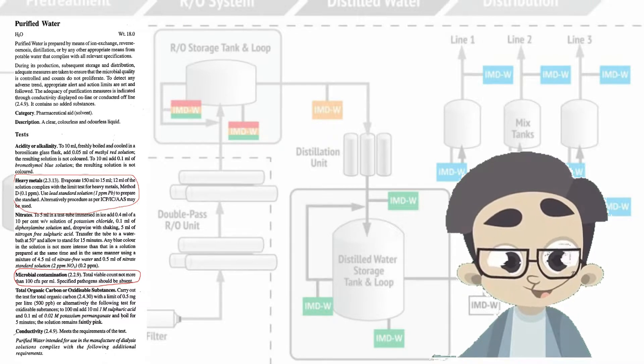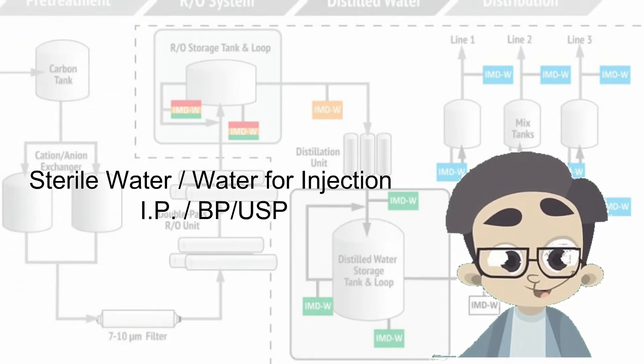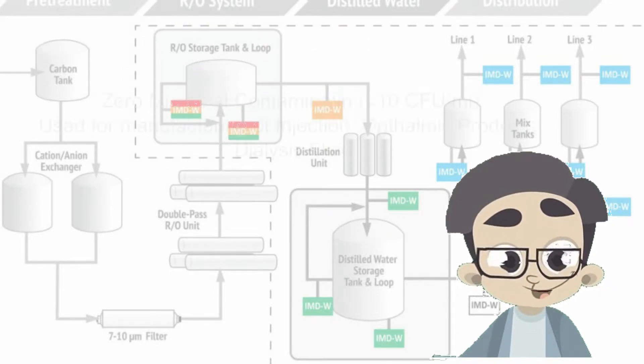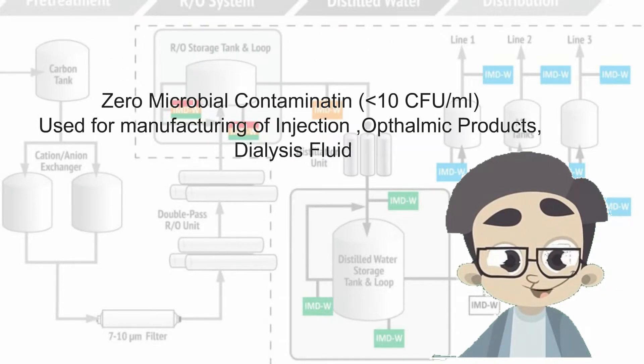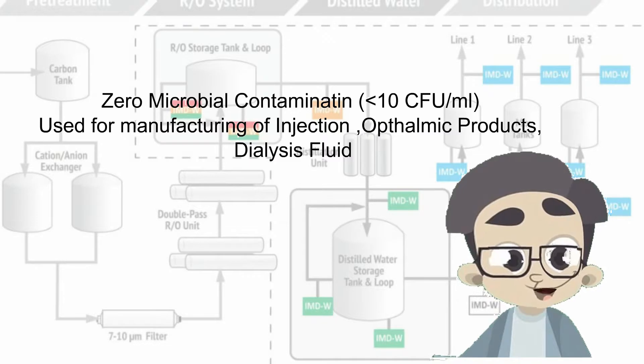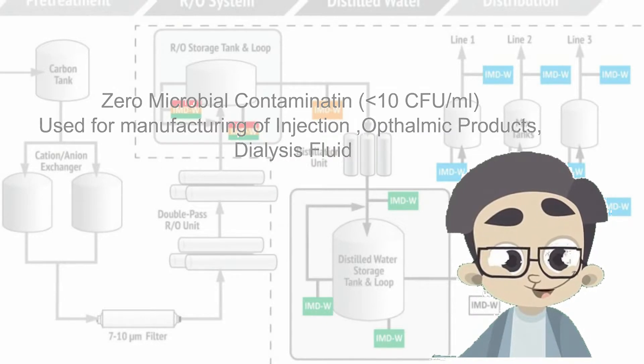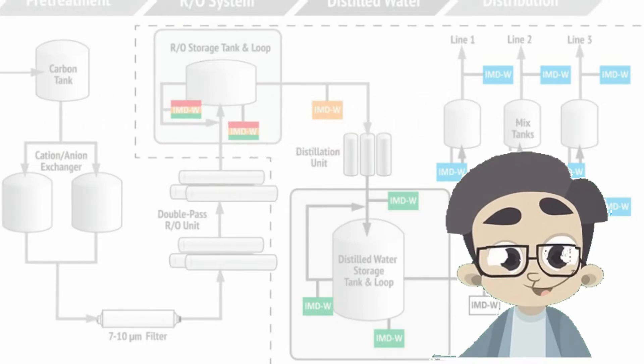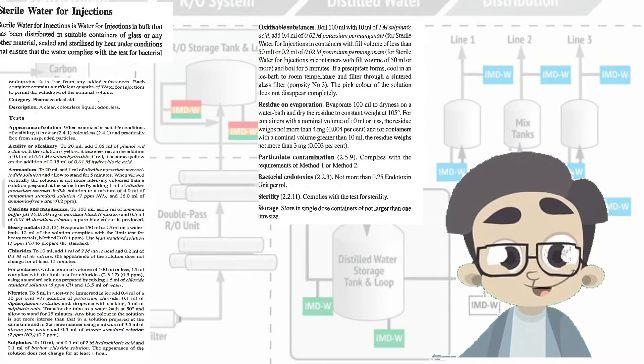Water for injections or sterile water for injections has practically zero microbial contamination load. This is the main difference. This type of water is used in the manufacturing of sterile products like injections, infusions, eye drops, etc. Now let us see the specs of sterile water for injection.